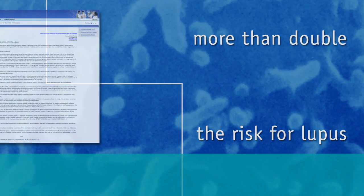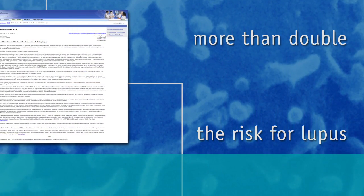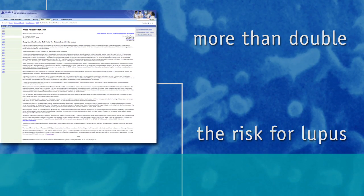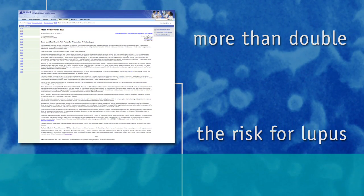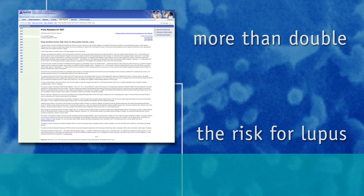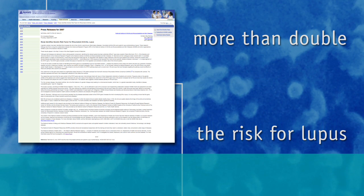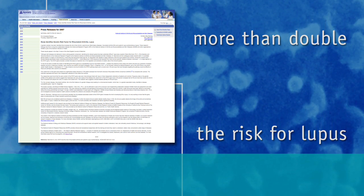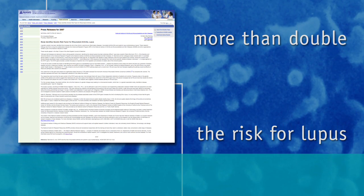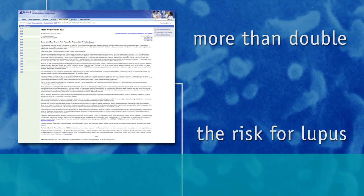The research also suggests a shared disease pathway for RA and lupus. The success of the study can be attributed in part to the productive, long-standing collaboration between NIAMS intramural researchers and other scientists that the Institute supports around the country.